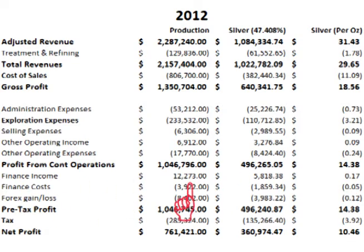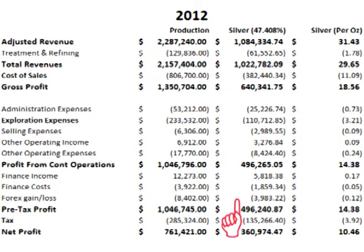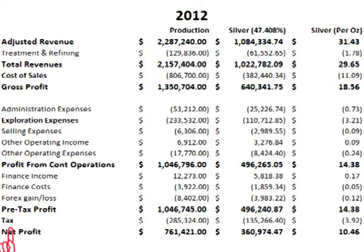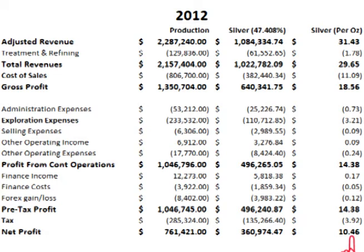There was also income from finance of about 12 million with about 5.8 million coming from silver or 17 cents per ounce. There was cost from finance of about 3.9 million with about 1.8 million coming from silver or 5 cents per ounce. There were foreign currency exchange rate hedging costs of about 8.4 million with about 4 million coming from silver or 12 cents per ounce. Subtracting these three final costs from the profit from continuing operations gives a pre-tax profit of about 1.047 billion, with a silver pre-tax profit of just under 500 million or $14.38 per ounce. Taxes in 2012 were about 285 million with about 135 million coming from silver or $3.92 per ounce. Subtracting the tax from the pre-tax profit gives a net profit for 2012 of about 761 million, with a net profit of about 361 million coming from silver and a net profit on silver production of $10.46 per ounce.